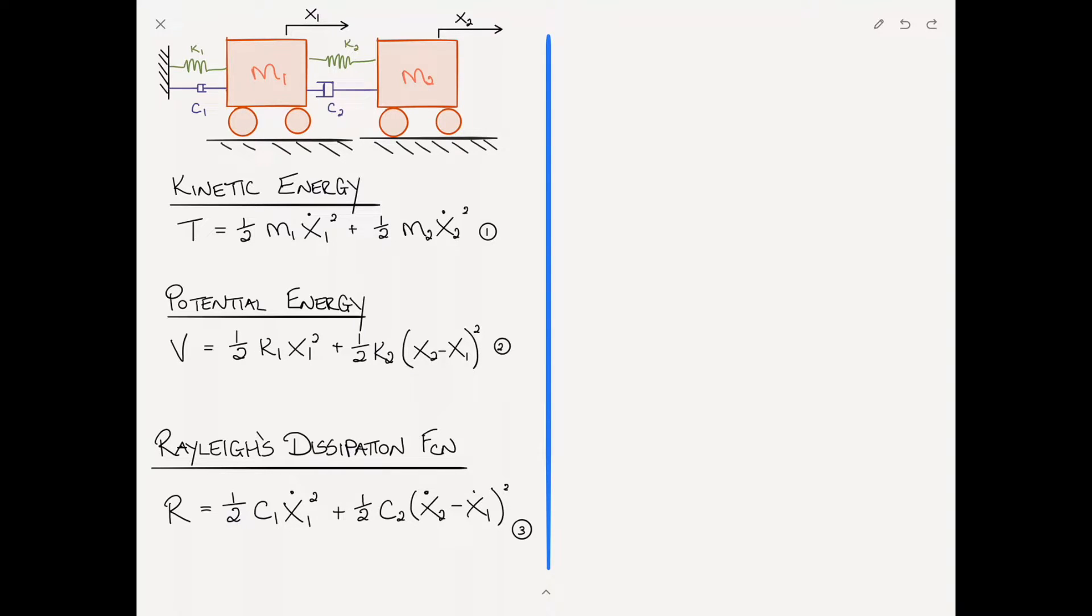Then we write the Lagrangian, which is L equals T minus V. We'll call that equation 4.